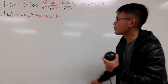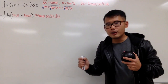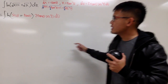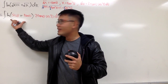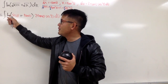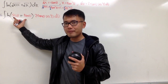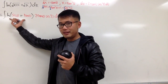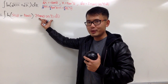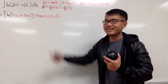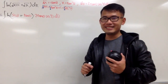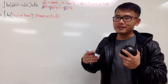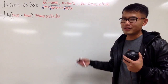Did we make the integral nicer or worse? It has a lot of things, but notice — if you differentiate ln of secant theta plus tangent theta, you get secant theta. So we can differentiate the ln part nicely, and we can integrate the 2 tangent theta secant squared theta part. So we're going to use integration by parts, or the DI method, which is just an easier way to set up integration by parts.